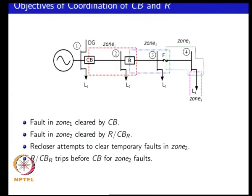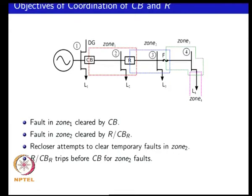We will call zone 1 the zone of protection for the circuit breaker and zone 2 corresponding to the recloser. If you have a fault in zone 1, it is the circuit breaker that has to protect. If you have a fault in zone 2, the recloser with its underlying circuit breaker characteristics should provide protection. If you are having temporary faults in zone 2, the recloser attempts should clear them.